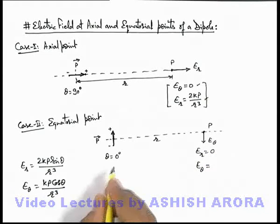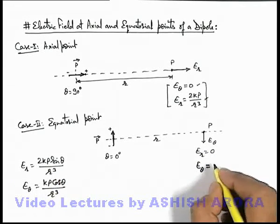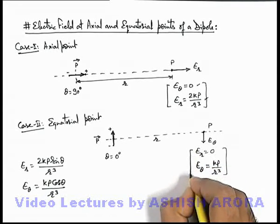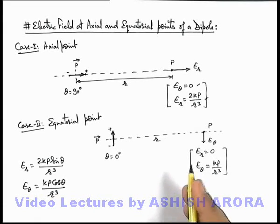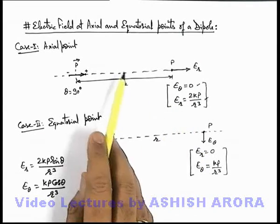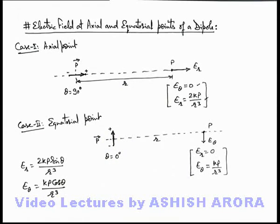Here if you substitute theta as zero, the first term becomes zero and it'll be kp by r³. This is the way how we calculate the electric fields in radial and transverse direction in case of axial and equatorial points of a dipole.